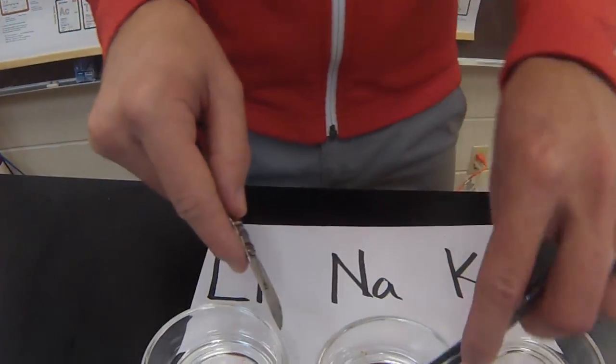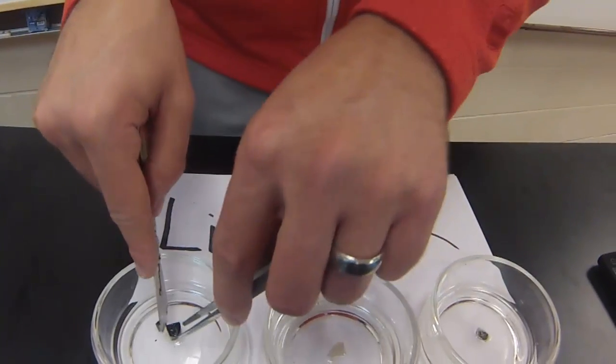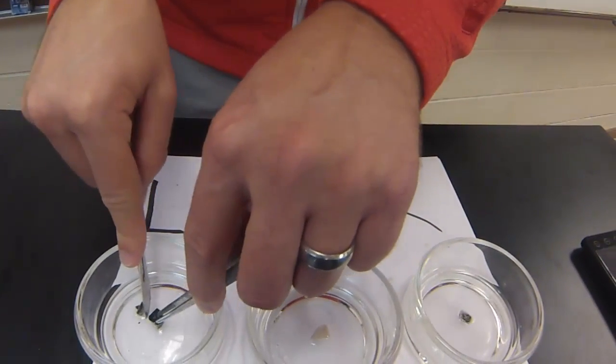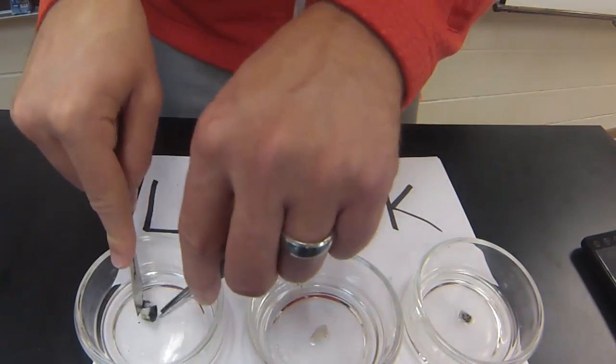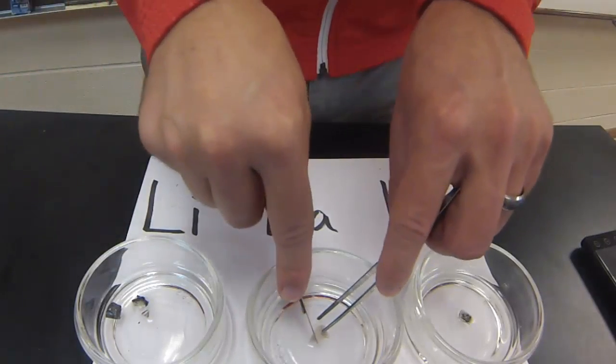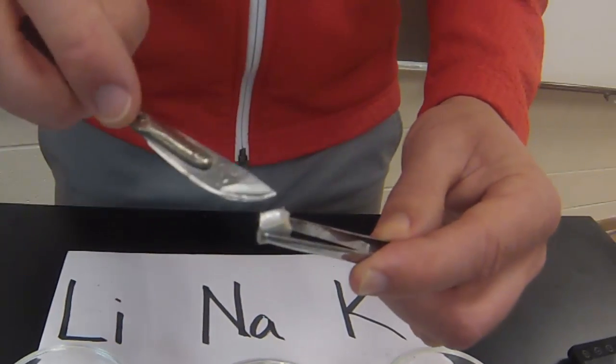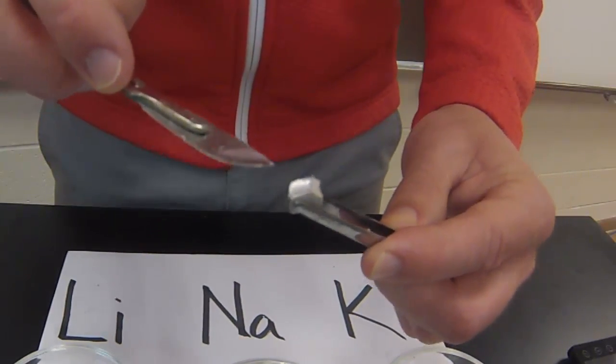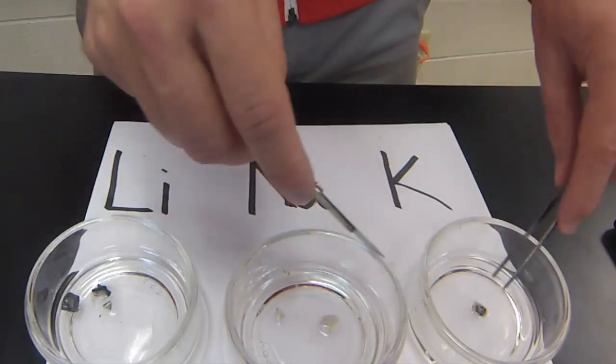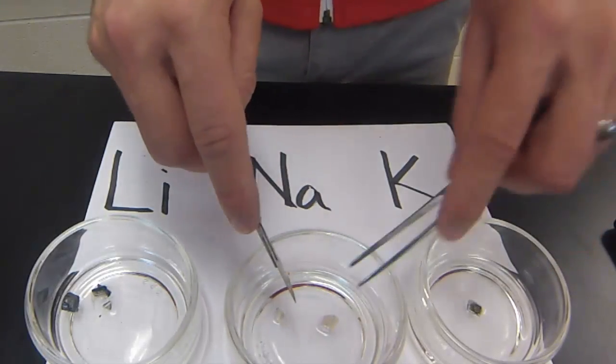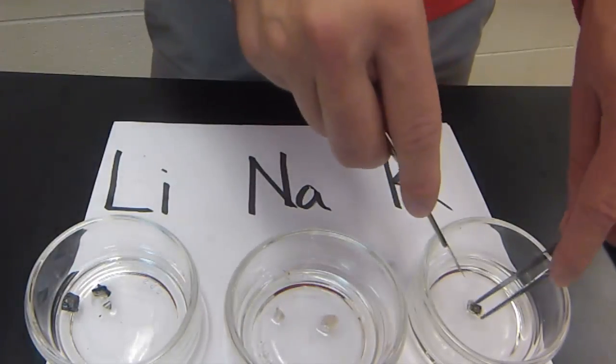Let's do the same thing with sodium. Lithium was easy to cut through but it's still a little bit difficult. Sodium, on the other hand, very easily cuts, and if we look inside sodium we can see that it's also pretty shiny inside. Since sodium was a little bit softer than lithium, I'm going to expect a trend here.